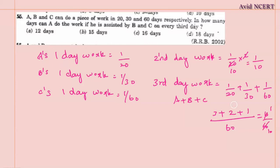Now we have to find 3 days work. 3 days work equals A's 2 day work plus 3rd day work. First 2 days work is 1/10 plus 3rd day work is 1/10, which equals 2/10 or 1/5.